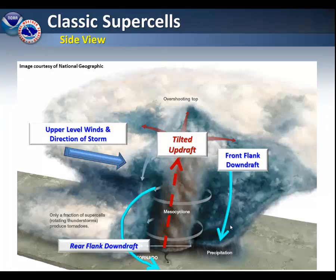Looking at a cross-section of a supercell, we have the mesocyclone in the middle, associated with the tilted updraft. On the front, we'll have the front flank downdraft — that's the area that's producing the precipitation, and often we'll have gusty winds with it. We have the rear flank downdraft in the back; that's associated with a rain-free base, and that's the area where the tornado would form.